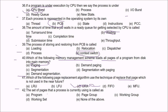Question 42: The set of pages that a process is currently using is called the Working Set.